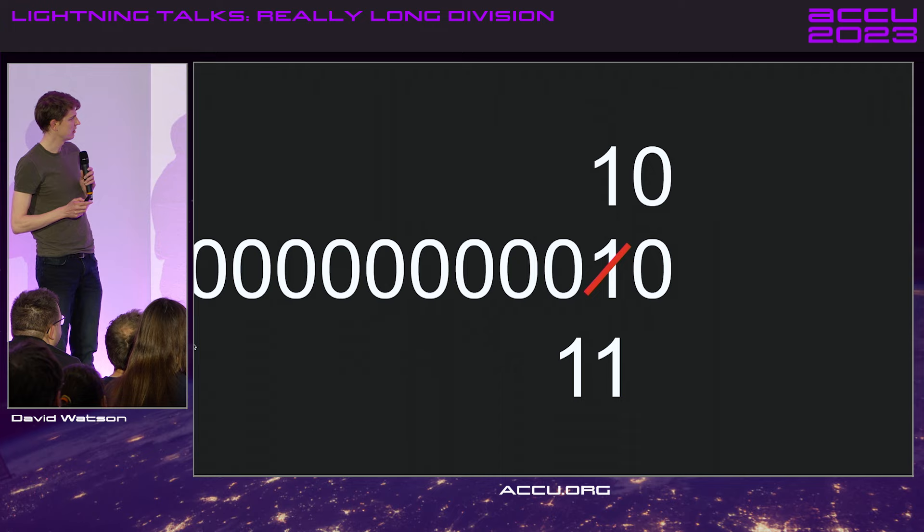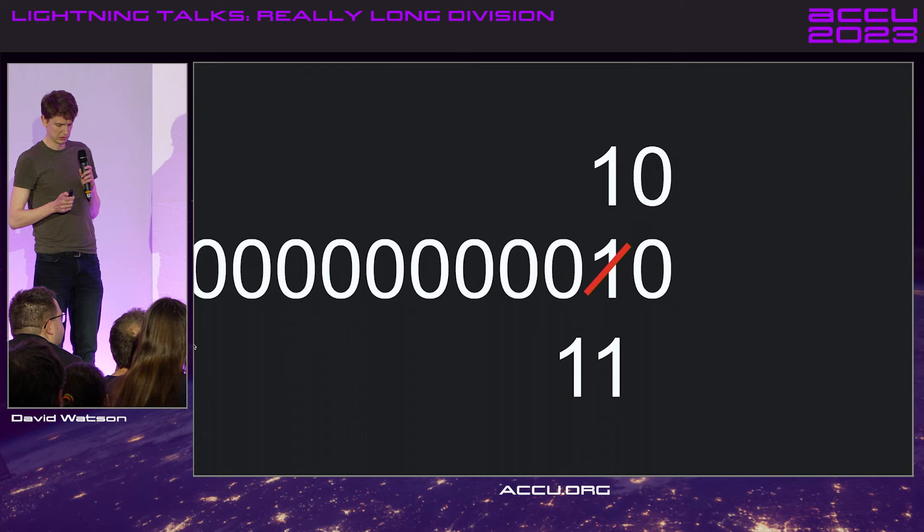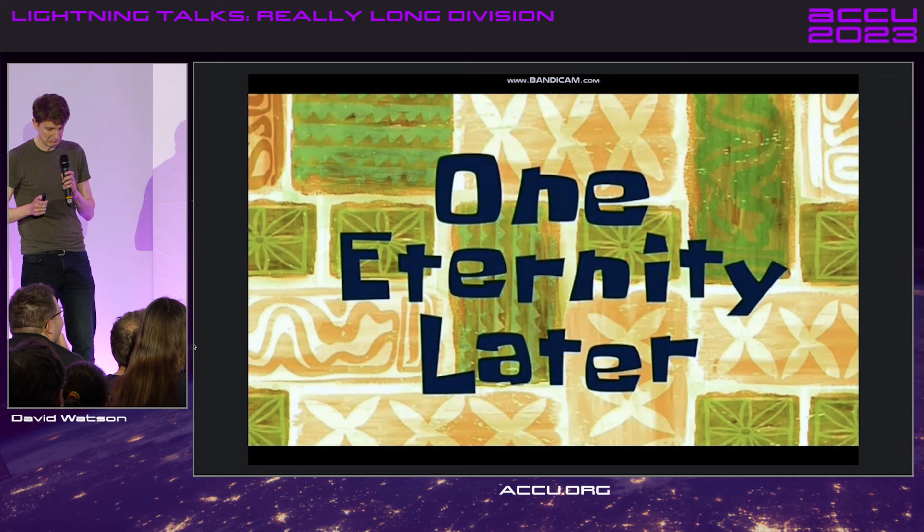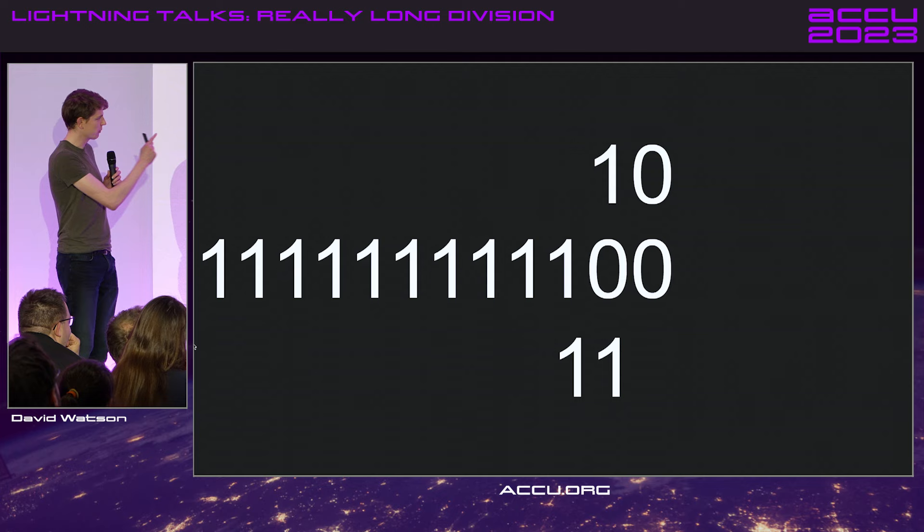Now, one goes into zero one time, so we'll take that away. And we've got this one that we carry on over — let's carry it on. We're going to carry it on again and again. I'll have to cut this short. So we get this chain of ones. And now we want to shift the three across again.